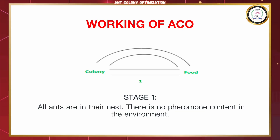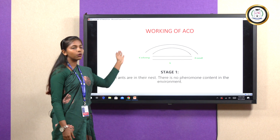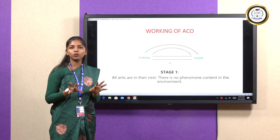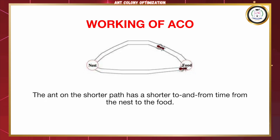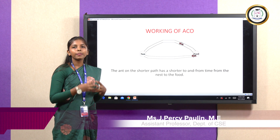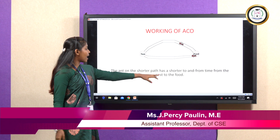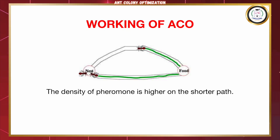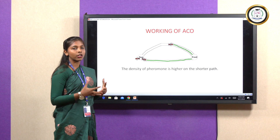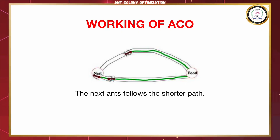Now let's see how the ant colony actually works. Initially we have the colony and the food, with two paths laid to reach the food. Ants are in their nest and there is no pheromone content in the environment. In the next stage, two ants each have the same possibility of going on either path to find the food. The shorter path takes the ant to the food sooner, so the ant from the shorter path returns to its nest more efficiently and takes the rest of the ants to get food along the same path. The density of pheromone is higher on the shorter path and the rest of the ants start to follow it as it is more easy and efficient.